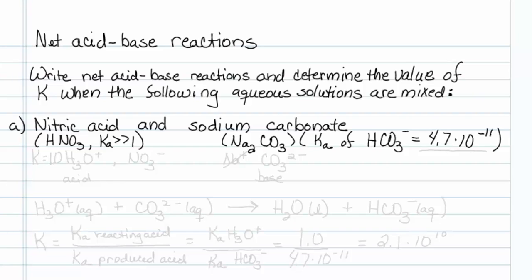Nitric acid, if you look at the Ka value of it, is a strong acid. So an aqueous solution of nitric acid actually consists of hydronium and nitrate. Sodium carbonate is an ionic compound, so an aqueous solution actually consists of sodium ions and carbonate ions.